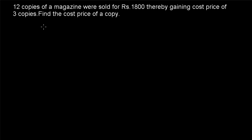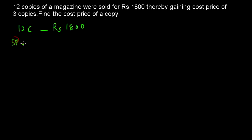Example number 3: 12 copies of a magazine were sold for ₹1800, thereby gaining the cost price of 3 copies. Find the cost price of a copy. This is a similar kind of question. The selling price is given directly — 12 copies are sold for ₹1800, so the selling price of one copy equals 1800 divided by 12, which equals ₹150.